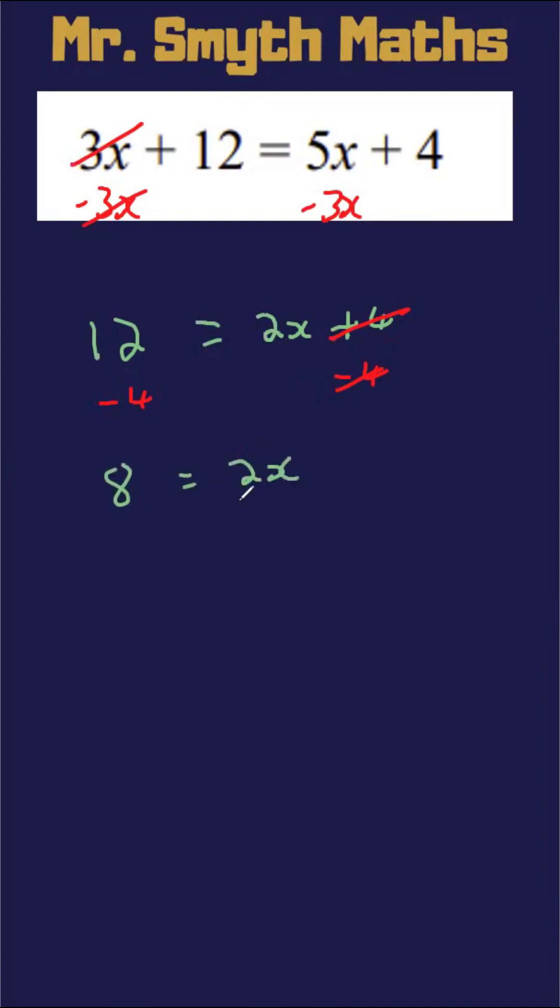I don't want the 2x, so I'm going to divide by 2 to eliminate. So 2 now cancels, and we're just left with x is equal to 8 divided by 2, which is 4.